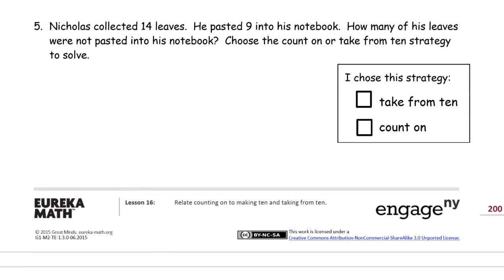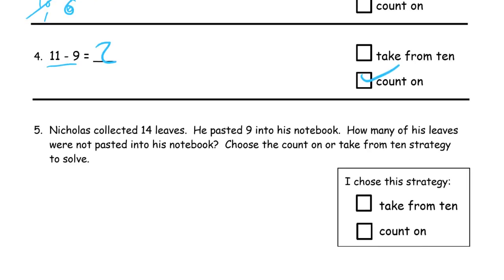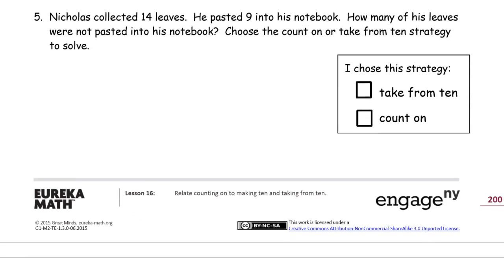Nicholas collected 14 leaves. He pasted 9 into his notebook. How many of his leaves were not pasted into his notebook? Choose the count on or take from 10 strategy to solve. So now what we have to do is draw a picture. 14 leaves. 1, 2, 3, 4, 5, 6, 7, 8, 9, 10, 11, 12, 13, 14.